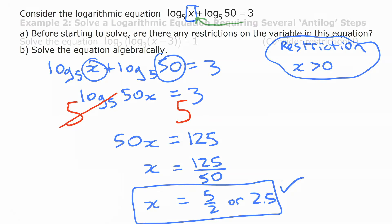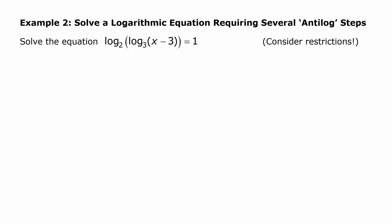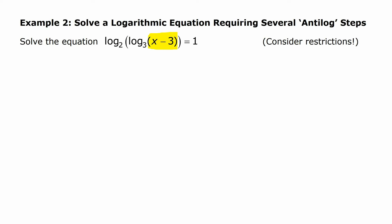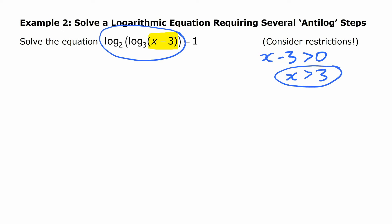Let's do another example. This one involves several steps. We have the variable we're trying to isolate inside log base 3, and then that inside log base 2 — it's a log of a log. We'll consider the restrictions at the start: this expression x minus 3 has to be positive, can't be negative or zero. So x minus 3 has to be bigger than zero, meaning x has to be bigger than 3. This already has a single term on each side, so we can actually just anti-log both sides at this point.